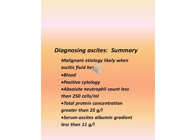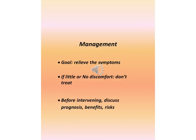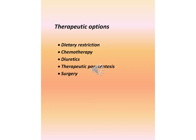Serum-ascites albumin gradient less than 11 g per liter. Management goal: relieve symptoms. If little or no discomfort, do not treat. Before intervening, discuss prognosis, benefits, and risks. Therapeutic options include dietary restriction, chemotherapy, diuretics, therapeutic paracentesis, and surgery.